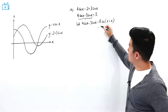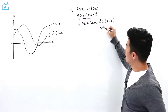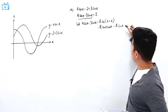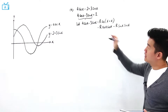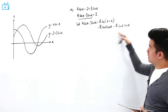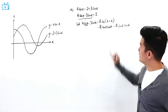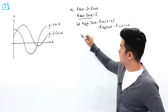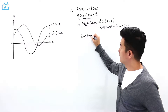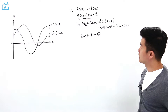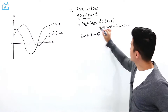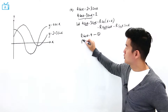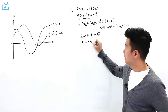Expanding this using the trig identities, this is R cosine x cosine α minus R sine x sine α. If I now match the left hand side and the right hand side, we have a cosine x here and a cosine x here, which means that 4 must equal R cosine α. We also have a sine x here and a sine x here, which means that 3 is matched to R sine α.